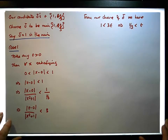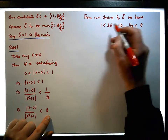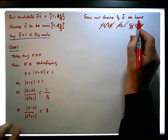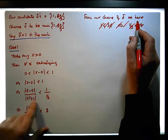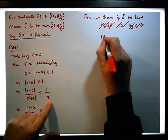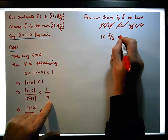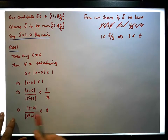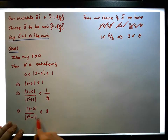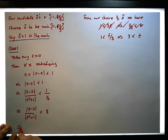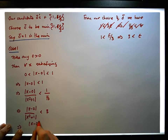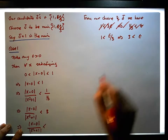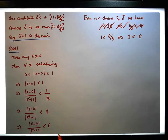So from our choice of delta, we have that one must be less than epsilon over three, which implies that three must be less than epsilon. So we now have that x minus zero over x squared plus one is less than three, which is less than epsilon — as required.